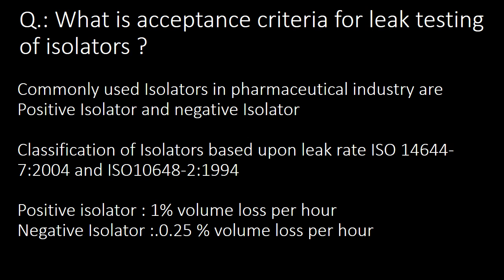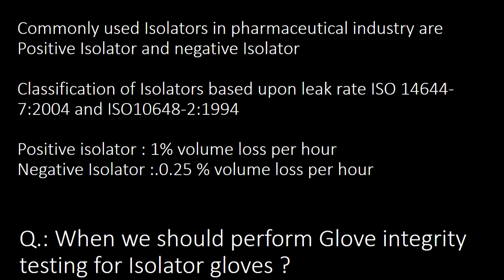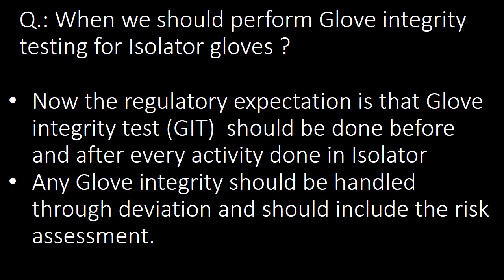The next important question: what is the acceptance criteria for leak testing of isolators? Commonly used isolators in the pharmaceutical industry are positive isolators and negative isolators. The acceptance criteria for positive isolators as per ISO is one percent volume loss per hour, whereas for negative isolators the acceptance criteria is 0.25 percent volume loss per hour.